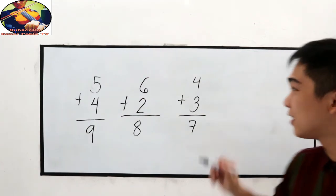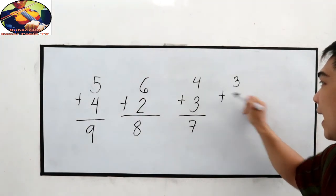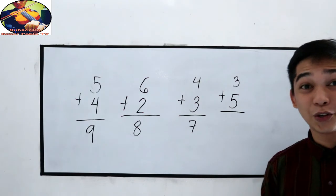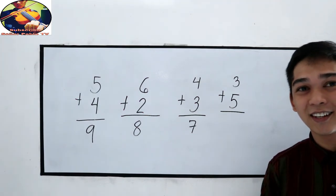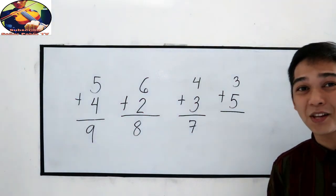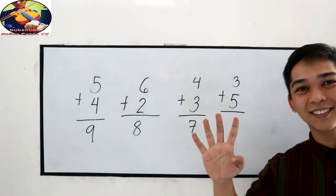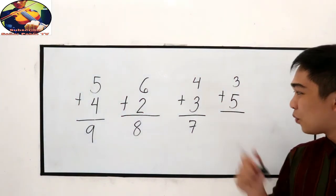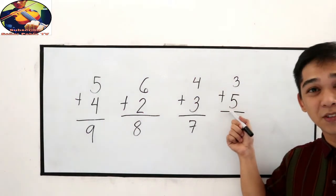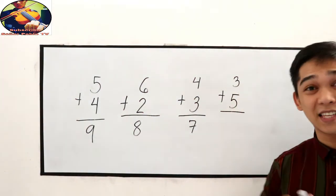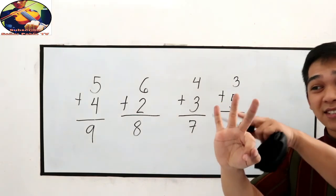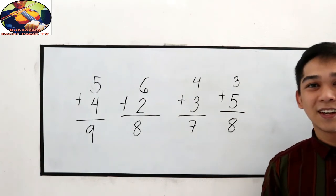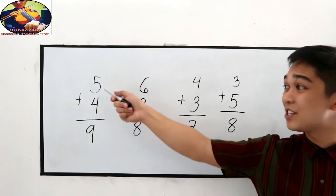What if we have 3 plus 5? Can you solve it? I will give you 5 seconds. So 3 plus 5: 6, 7, 8. The answer is 8. That is how to add a single digit number. Let us proceed to 2-digit numbers.